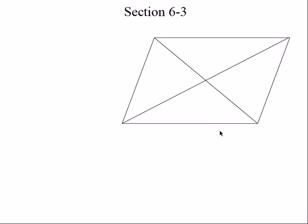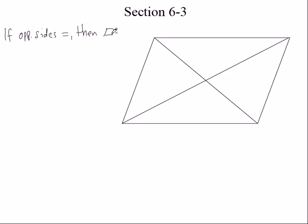In fact, that's exactly what this lesson is today. I don't know it's a parallelogram at first, but if I was able to show that both pairs of opposite sides were parallel, then it would be a parallelogram. Let's jot these down. If both pairs of opposite sides were equal to each other, then it's a parallelogram. If the opposite angles were equal to each other — that's what Joanna said — then this thing would be a parallelogram.